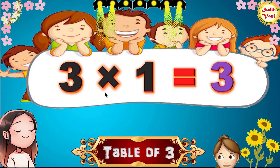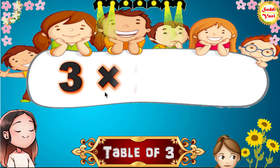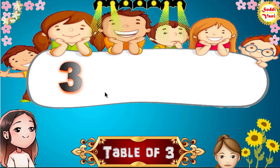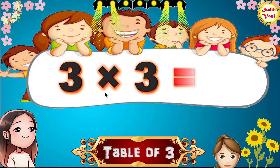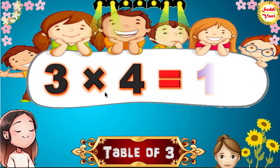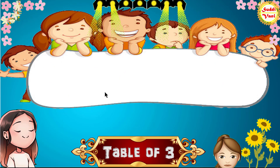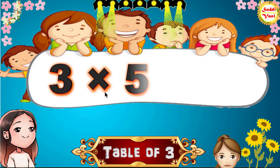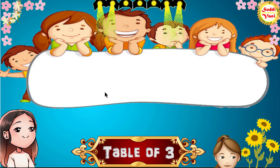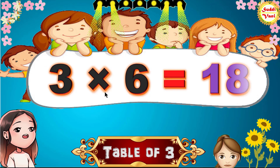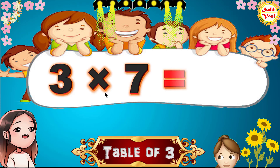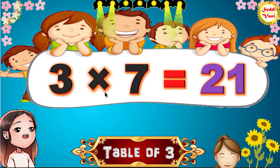3 1's are 3, 3 2's are 6, 3 3's are 9, 3 4's are 12, 3 5's are 15, 3 6's are 18, 3 7's are 21.